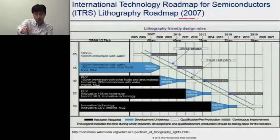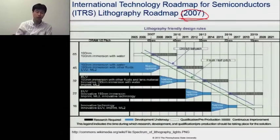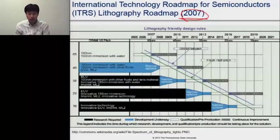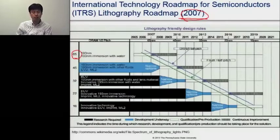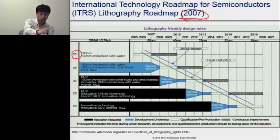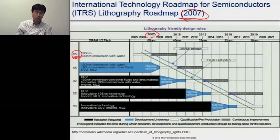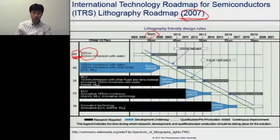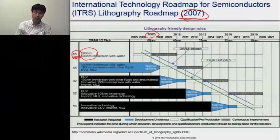This is a slightly old roadmap, but it's very interesting to see. In 2007, the International Technology Roadmap for Semiconductors — a non-profit organization — noted that the technology was around 65 nanometers, meaning the smallest feature size achievable for commercial microprocessor fabrication was about 65 nanometers. At that time, the 193-nanometer scanner projection printer was the current lithography tool, and they said this tool could only go down to a feature size of 45 nanometers.